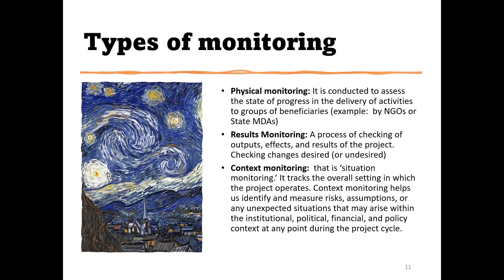There is also context monitoring — you need to understand the situation where you are operating so that if there are risks or unexpected things arise, whether politically or institutionally, you will monitor and report them. This is very important, especially for those implementing M&E activities in resource-constrained or conflict areas. You need to understand and monitor context and risks so you don't fall victim. Even tracking incidences of insecurity in a particular community and keeping records will help you make informed decisions — whether to strategize, go, or work with people at the location rather than traveling.